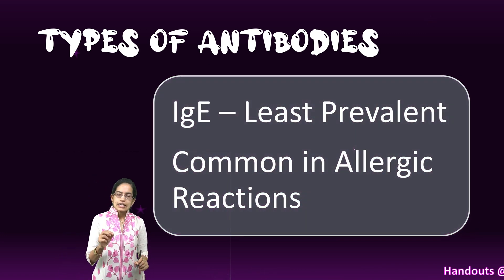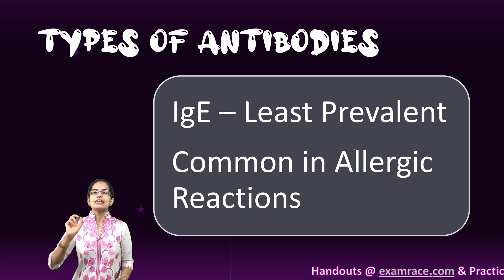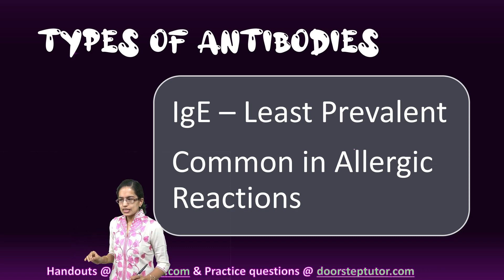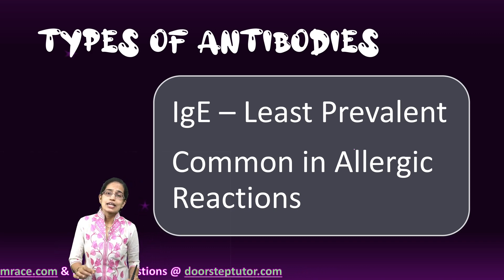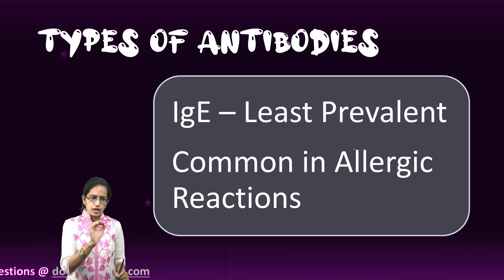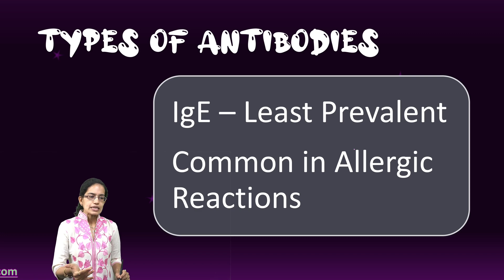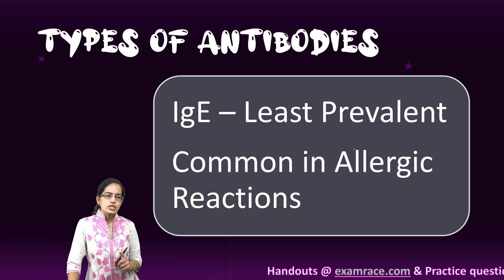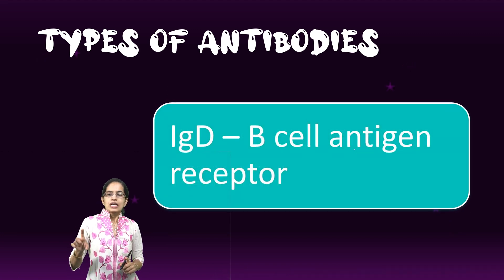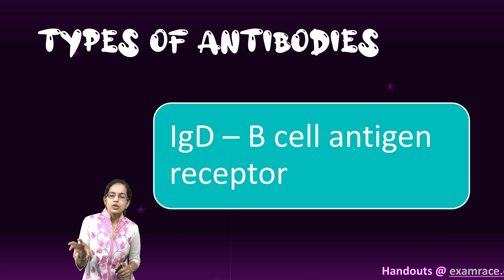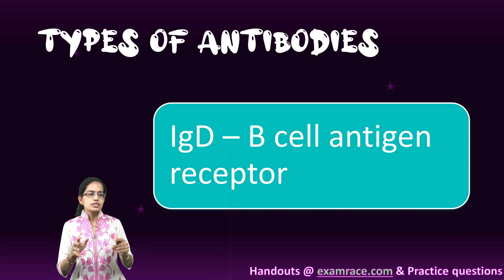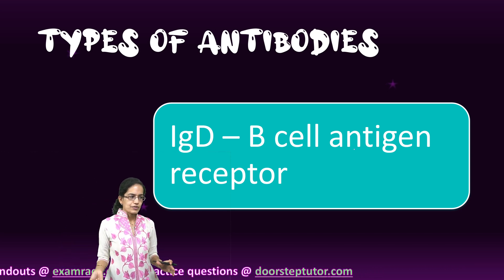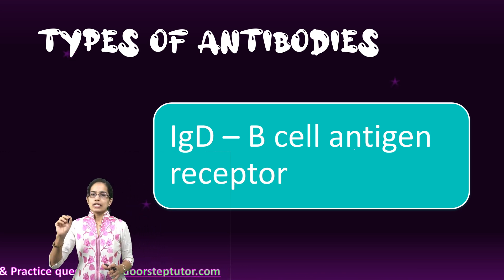Immunoglobulin E is one of the least prevalent and is most commonly associated with allergic reactions such as asthma and allergic rhinitis. These are also called pathogen-mediated cross-linked receptors. Immunoglobulin D are B cell antigen receptors that participate in B cell maturation, maintenance, and activation. They are also involved in regulating selection and homeostasis.